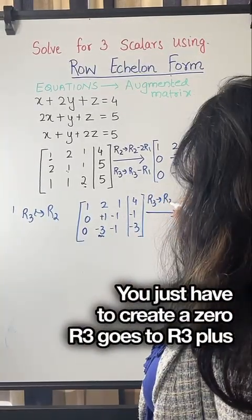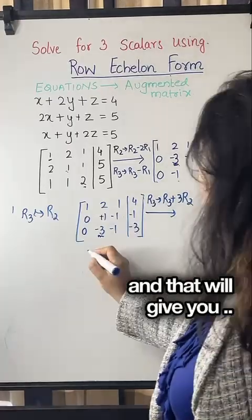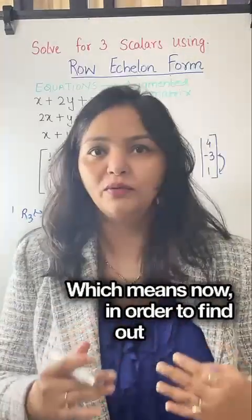R3 goes to R3 plus three times R2, and that will give you... which means now in order to find out x, y, z, what you want to do is convert it to equation form once again.